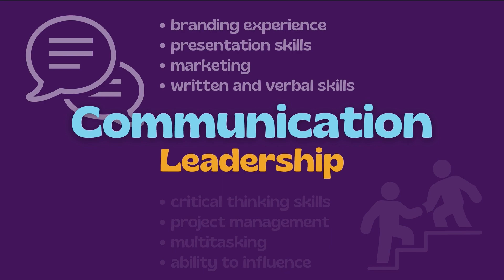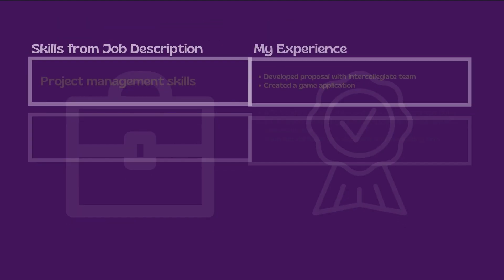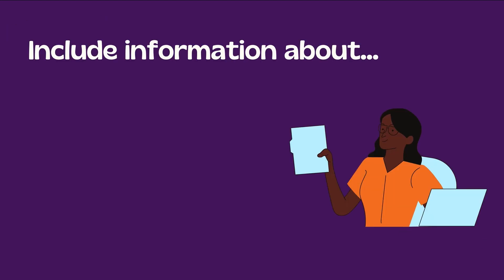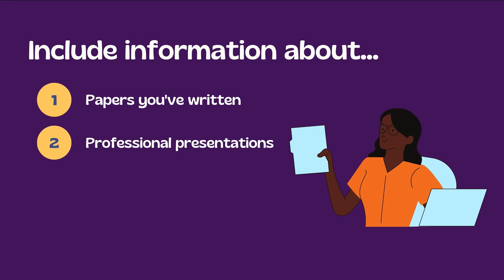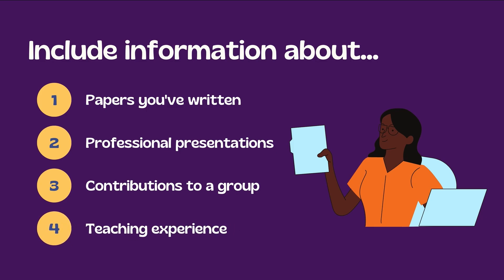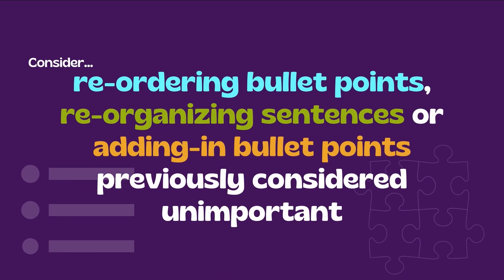Now that you have an idea of the themes and which skills are important, let's make a chart. On the left, list the skills the employer is seeking; on the right, list how you've used these skills. Make sure you're representing these on your resume. Focusing on the communication theme, you can include information about papers you've written, professional presentations you have given, how you've contributed to a group, or a teaching experience. You may need to reorder bullet points, reorganize sentences, or even add bullet points you previously thought weren't important to include.